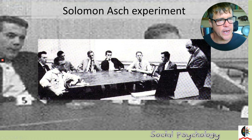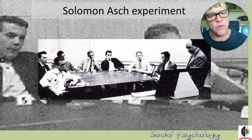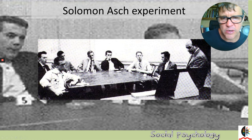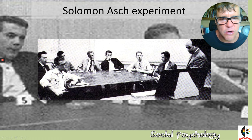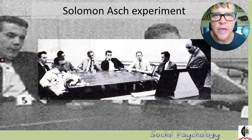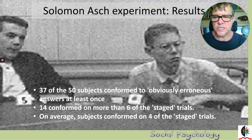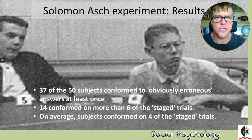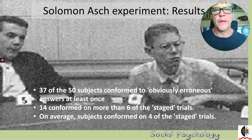Solomon Asch had a collection of 18 lines: 12 lines where everyone gave the correct answer, and 6 critical trials where confederates gave the incorrect answer. On the fourth round, the first individual gives the incorrect answer, then the second, and so on — and now it comes to you. The results show that 37 of 50 subjects conformed and gave the obviously incorrect answer at least once; 14 conformed on all six critical trials, and on average subjects conformed on four of the six stage trials — high levels of conformity even when they knew the answer was wrong.